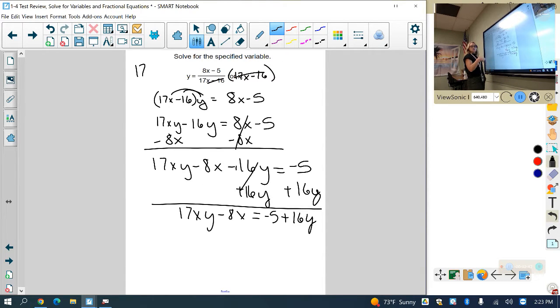Fish out an x, or use the distributive property backwards. So I put x out in front. I have 17y minus 8 equals negative 5 plus 16y. And now divide by everything that's attached to the x,